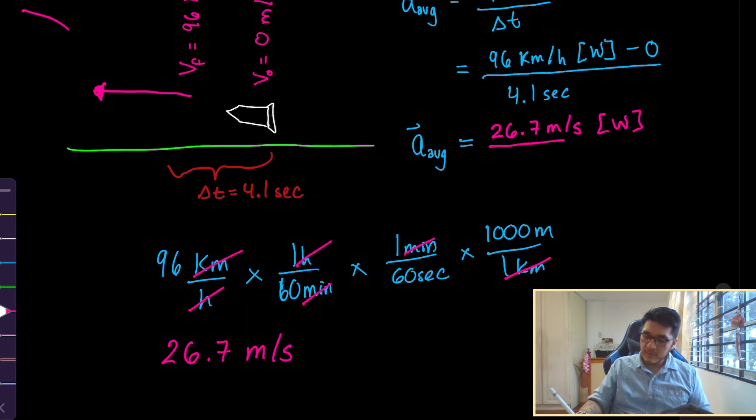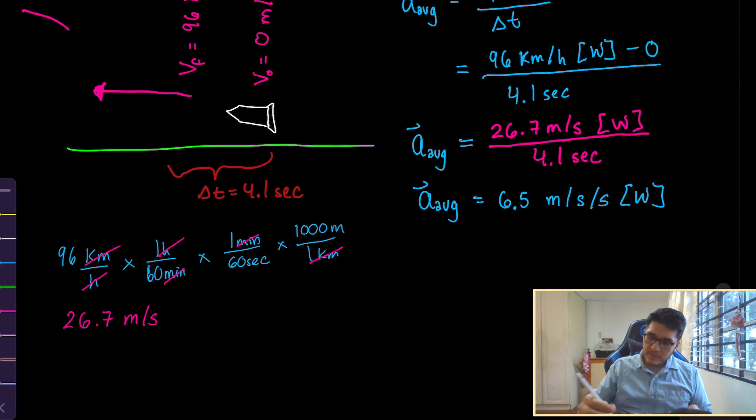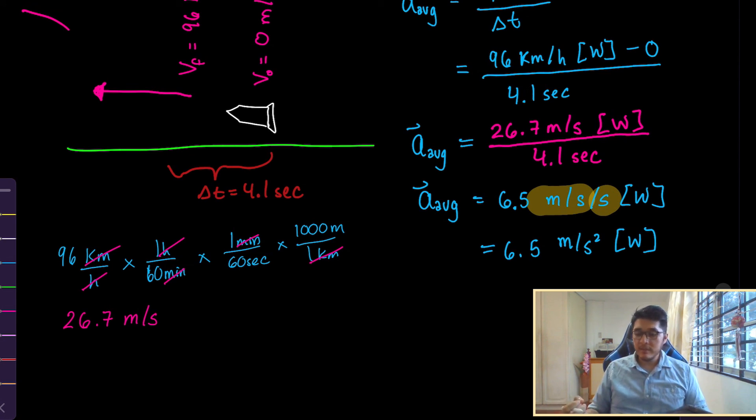And we have the direction going west, divided by 4.1 seconds. Which gives us our average acceleration of 6.5 meters per second, per second, west. You could always write this as 6.5 meters per second squared, west. What I like about meters per second, per second, is that this reminds me that average acceleration tells how quickly velocity changes. So in each second of time that goes by, our velocity gets larger by 6.5 meters per second.